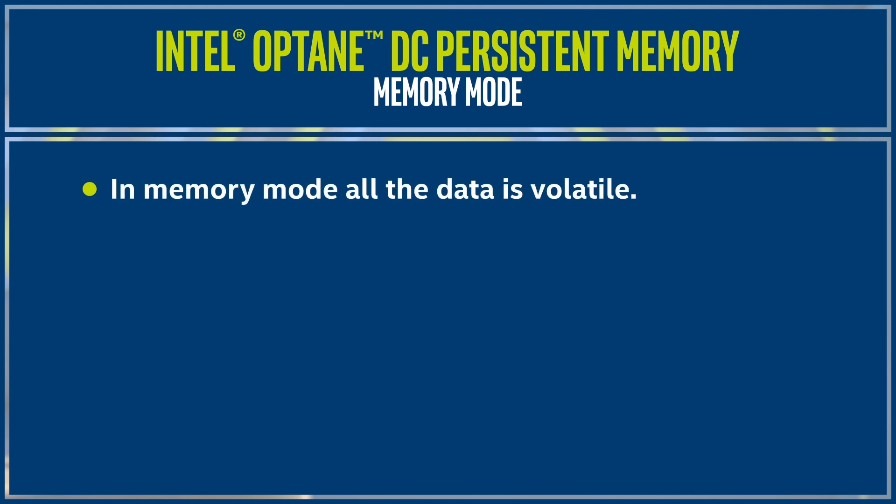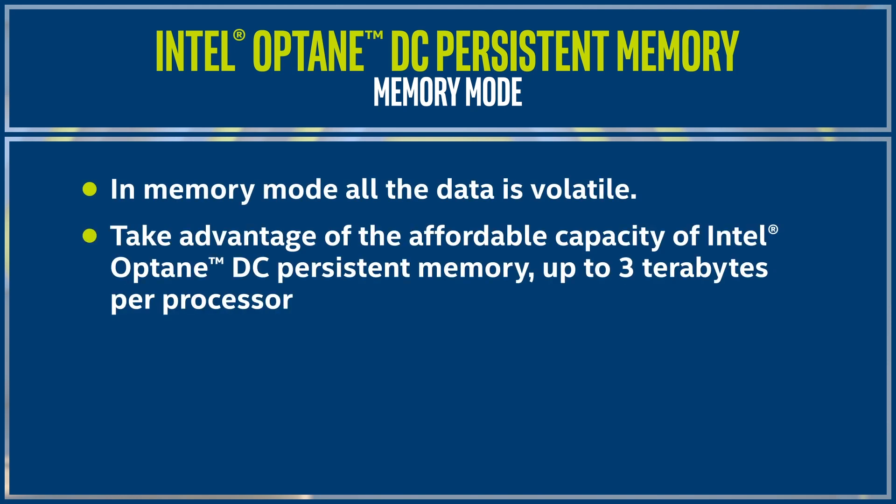In Memory Mode, all the data in memory is volatile, just like today, but you can take advantage of the affordable capacity of up to 3 terabytes per processor.